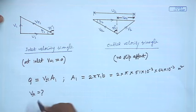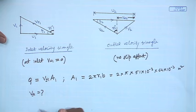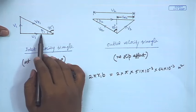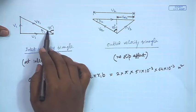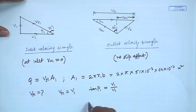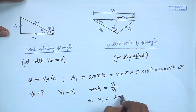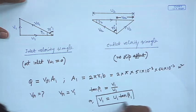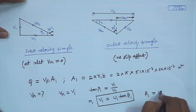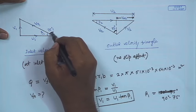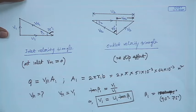Since there is no swirl component, Vf1 = V1. From the velocity triangle, tan(β1) = V1 / u1, so V1 = u1 × tan(β1). Beta1 is 90° minus 75° = 15°. u1 is the peripheral velocity at inlet, calculated as π × d1 × n / 60 = π × 2 × 51×10⁻³ × 900/60 = 4.81 m/s.